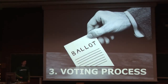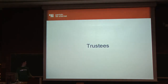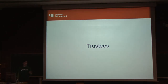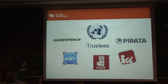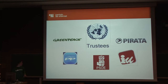How does the voting system work? First, we have the trustees — people or entities we trust with the secrecy of our vote. These could be the United Nations, Greenpeace, or political parties — all kinds of organizations. The system guarantees that only if all of them collaborate and are corrupt will your vote not be secret.